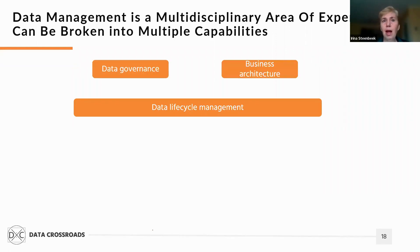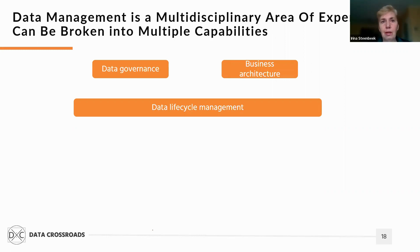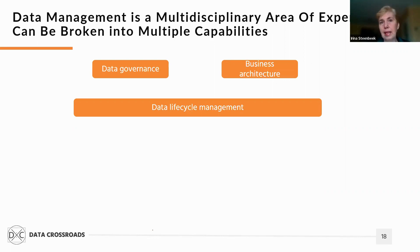Then we need to have a set of capabilities that define a direction and create a framework in which data management operates. These capabilities belong to the strategic level. These two capabilities are business architecture and data governance. You can also add some other capabilities to this layer.